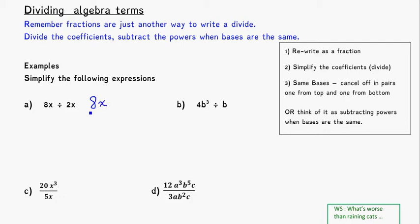So 8x over 2x. The first one always goes on top, the second one always goes on bottom. So now I have 8x over 2x, and I'm going to think about simplifying the coefficients. So I'll look at just these things in front here.